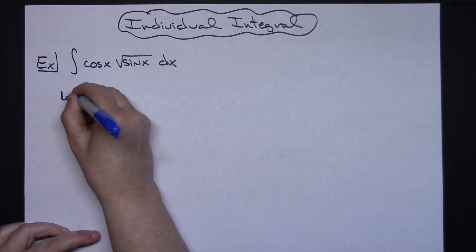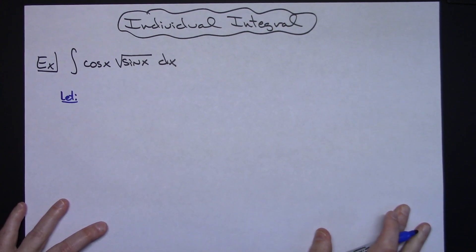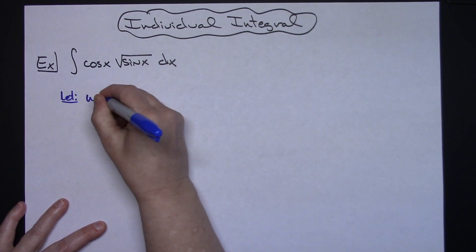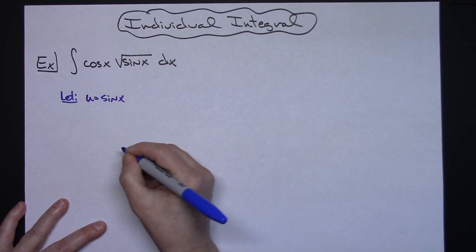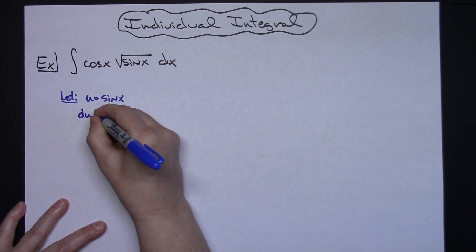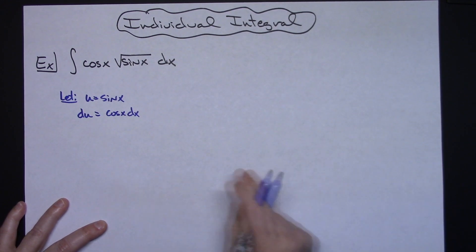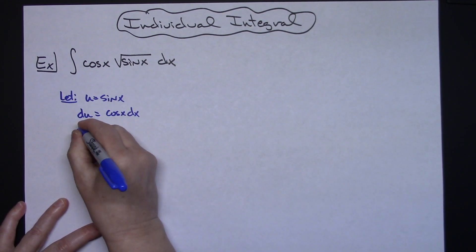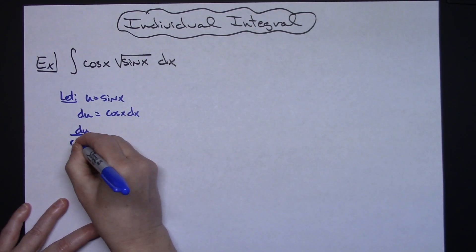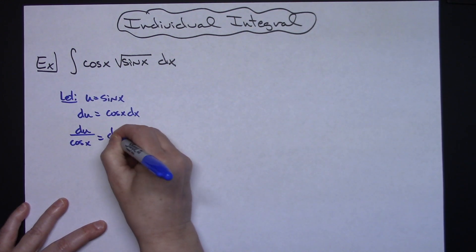So we're going to start by letting our u equal sine x. We'll take the derivative of both sides so we'll get du equals cosine x dx and then if we solve for dx there we will have du over cosine x equaling dx.